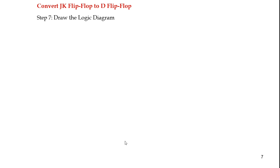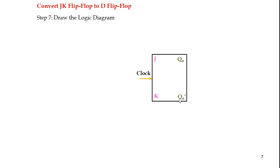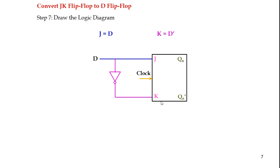The next step is to draw the logical diagram. This is the JK flip-flop with J and K as inputs and Qn and Qn̄ as outputs. We give the clock pulse. The equations are J = D and K = D̄. The D input is fed directly to J, and the complement of D is fed to K. This completes the realization, which is the conversion of a JK flip-flop to a D flip-flop.